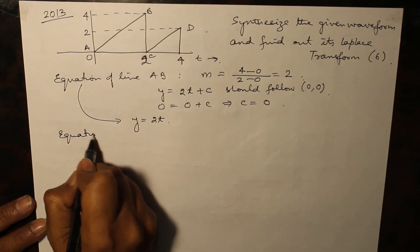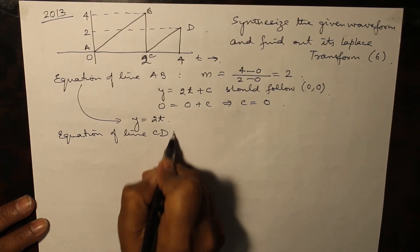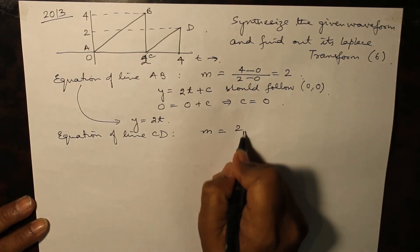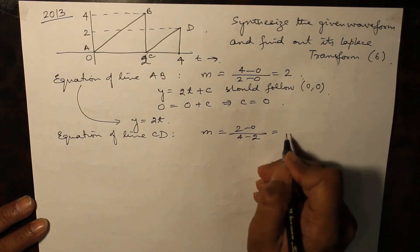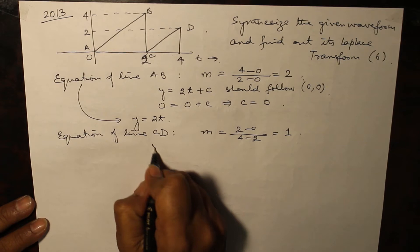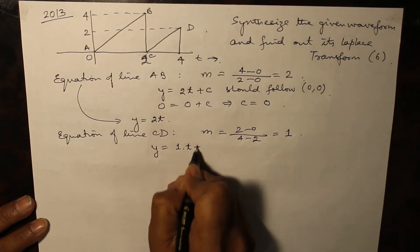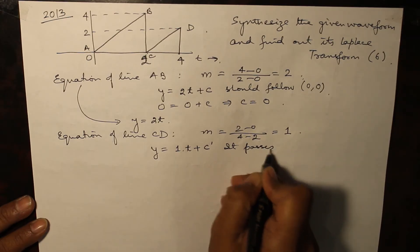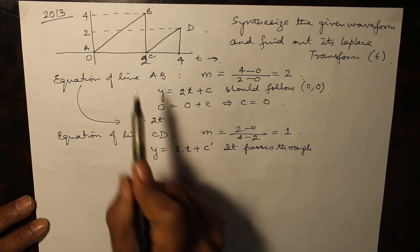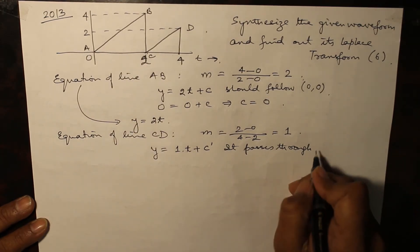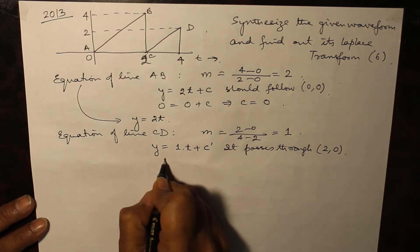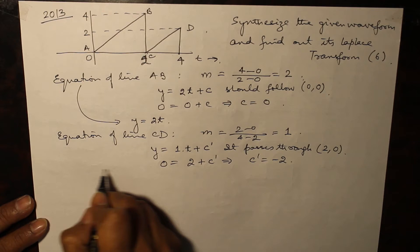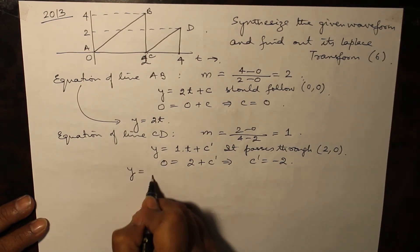For the second equation of line CD, the slope is (2 minus 0) divided by (4 minus 2), which comes out to be 1. The equation of the line becomes y equal to t plus c'. It passes through the point where t equal to 2 and the value is 0, so 0 equals 2 plus c', giving c' equal to minus 2. The equation of the line becomes y equal to t minus 2.